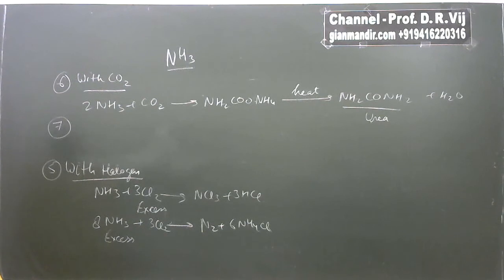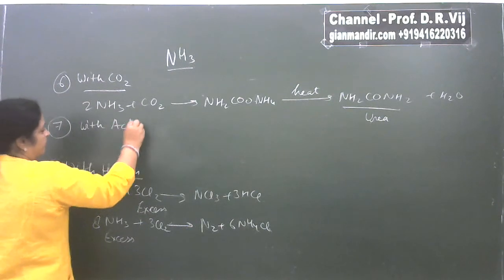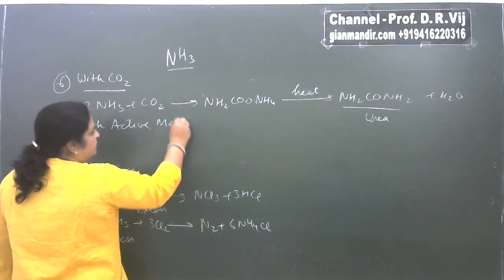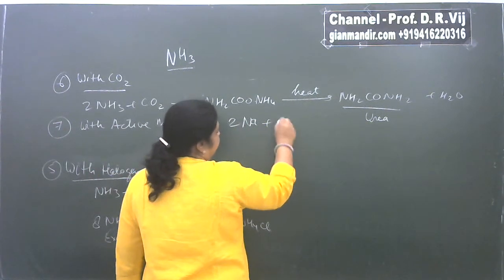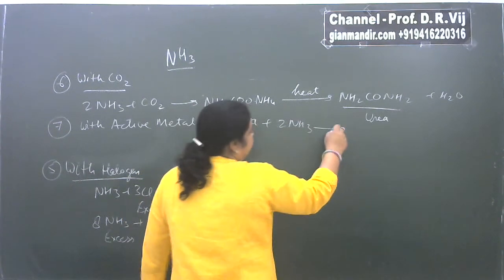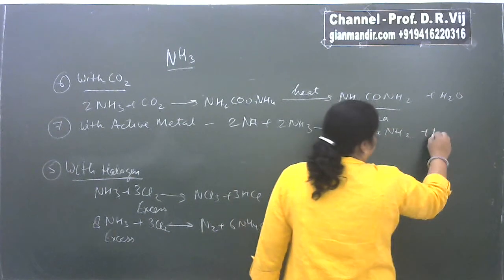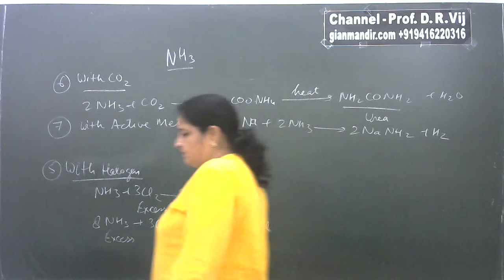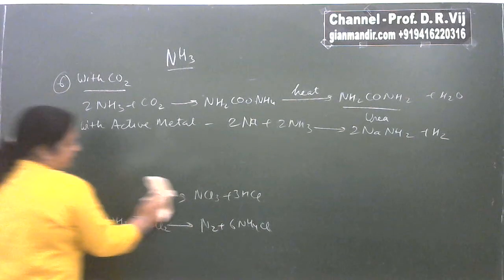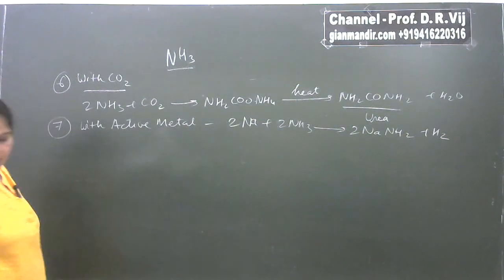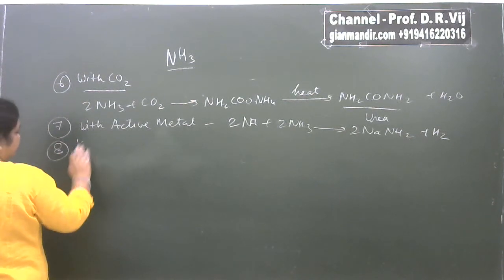Another reaction to consider is the reaction of ammonia with active metals. With active metals like sodium, ammonia reacts to form their amides along with liberation of hydrogen gas. For example, sodium reacts with ammonia to give sodium amide and hydrogen gas is evolved.